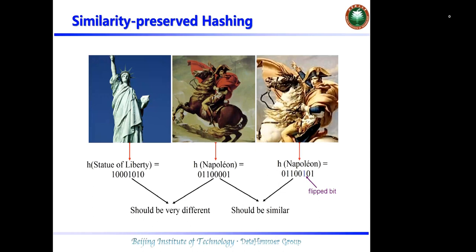when we are conducting the image retrieval task, we can directly use the hash codes to retrieve images, which will greatly improve the retrieval speed and reduce the storage cost.